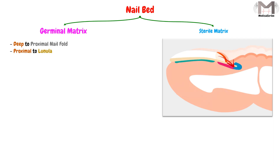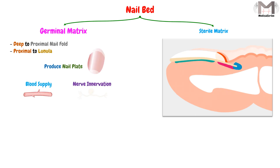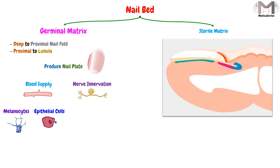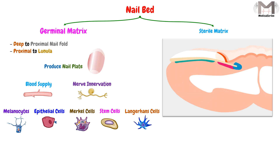This zone produces the nail plate because it has a blood supply and nerve innervation. It also has many types of cells that help in nail plate production, such as melanocytes, epithelial cells, Merkel cells, stem cells, and Langerhans cells.